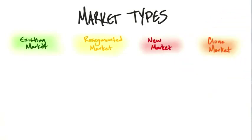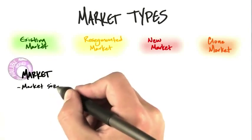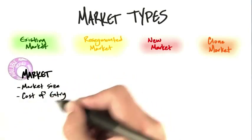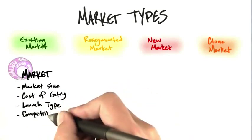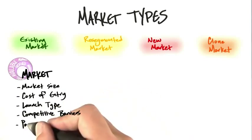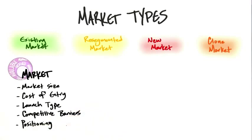So let's take a look at why this is important, and then we'll give you the definition of each one. It turns out that the type of market changes everything. It changes your initial market size, how much it costs to enter the market, what kind of launch you do of your product. It affects the type of competitive barriers you have, and how you position or describe your product.